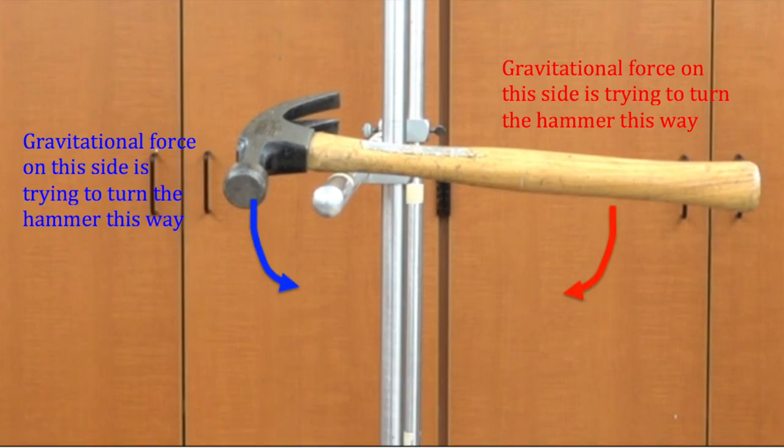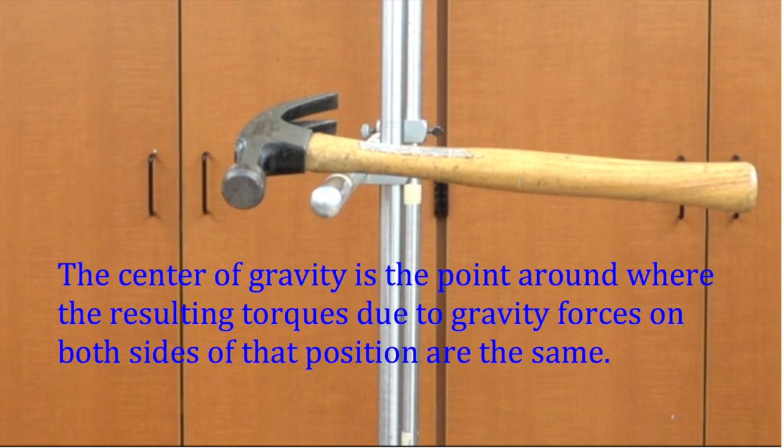Gravitational forces on either side of this position are trying to turn the hammer in opposite directions. These efforts trying to turn the hammer are called torques, and when these torques are equal, the hammer balances.